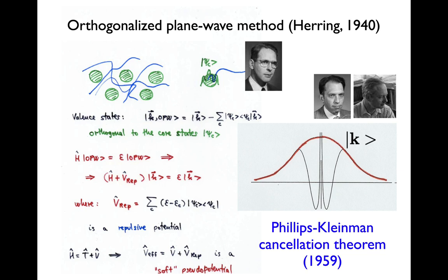Now the formalism for the pseudopotential matured when Phillips and Kleiman proposed their cancellation theorem. It was based on ideas by Herring, in particular his orthogonalized plane wave method,